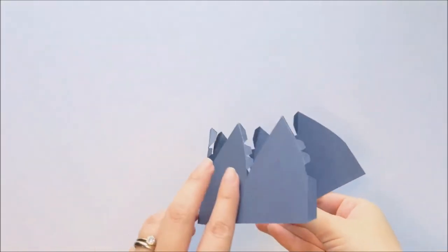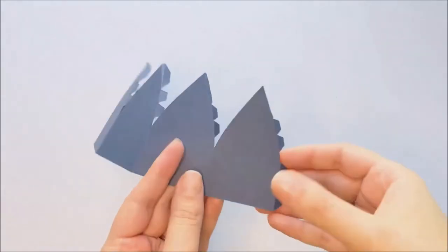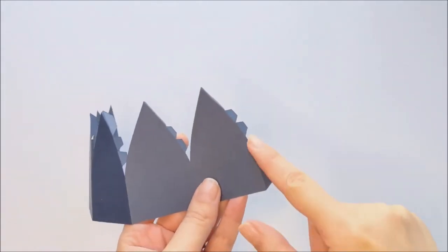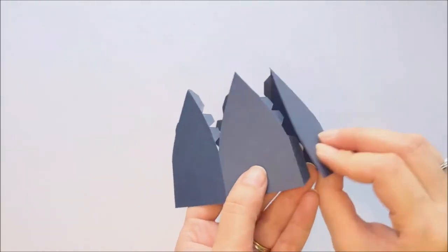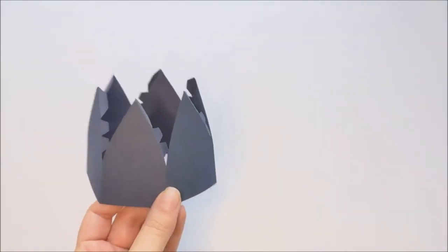Next, we're going to assemble our top, which is also going to act as our lid. The first step is you're going to place glue along this side flap here and then bring that around to the other side and it's going to form what looks kind of like a crown shape.